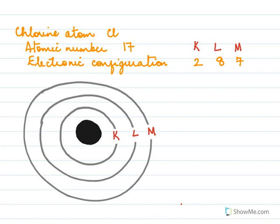In the first shell chlorine has got 2 electrons. Then in the second shell it has got 8 electrons: 1, 2, 3, 4, 5, 6, 7, 8 electrons. And in the last M shell it has got 7 electrons: 1, 2, 3, 4, 5, 6, 7.